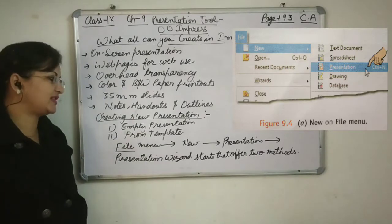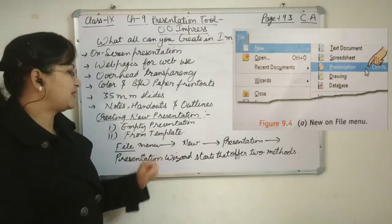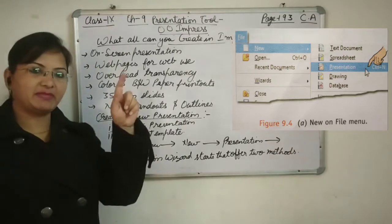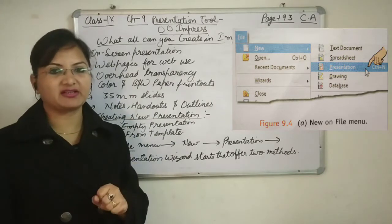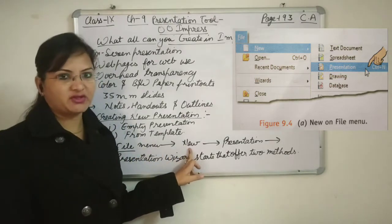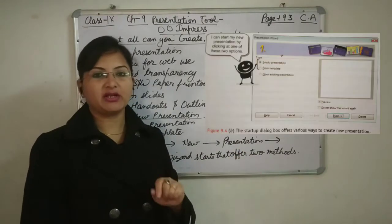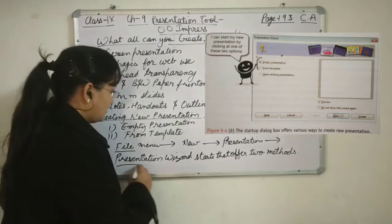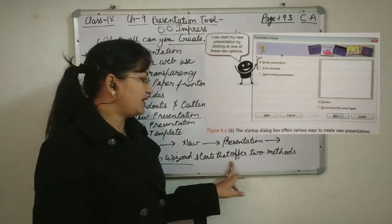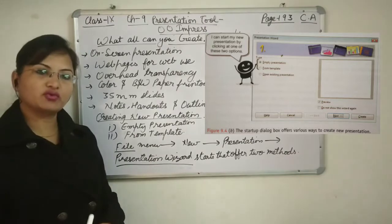Now, creating a new presentation. When creating a new presentation in Impress, we have two options: empty presentation and from template. To access these options, click on File in the menu bar, choose New, then select Presentation. A presentation wizard will appear as a pop-up, where you will see the two methods — empty presentation and from template — and you can choose whichever you want.